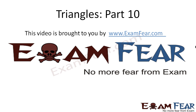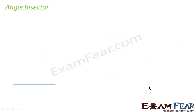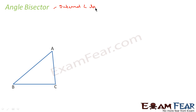This video on triangles part 10 is brought to you by examfear.com. Please make sure that you have watched parts one to nine before watching this video. Now let's start with the angle bisector concept. There are two kinds of angle bisectors: one is called internal angle bisector and the second is called external angle bisector.